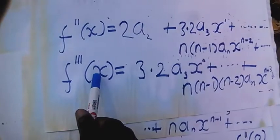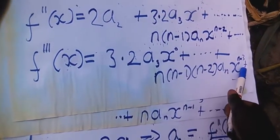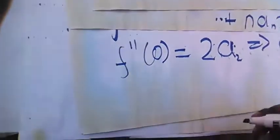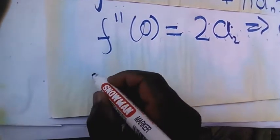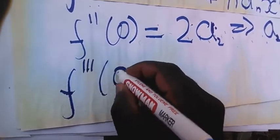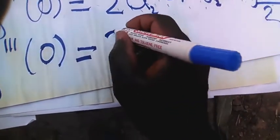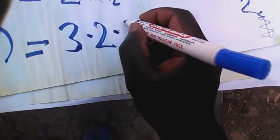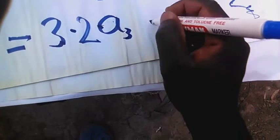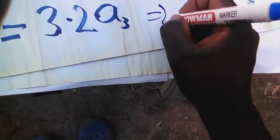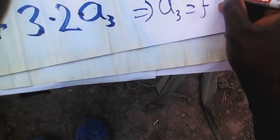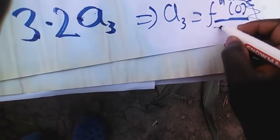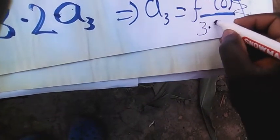If we do the same to the third derivative function, putting x equals 0, we shall have f triple prime of 0 equal to 3 times 2 times A3. So it means A3 will be equal to f triple prime of 0, over 3 times 2, which is 3 factorial.